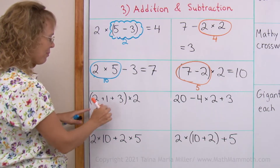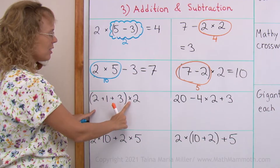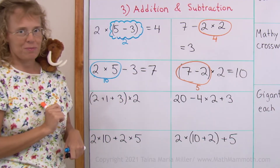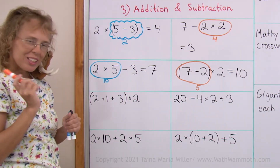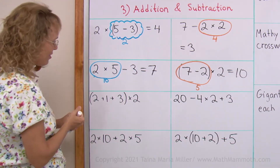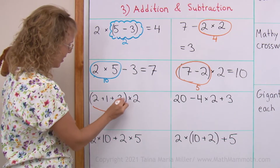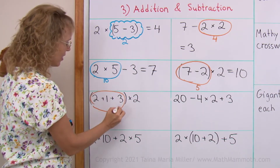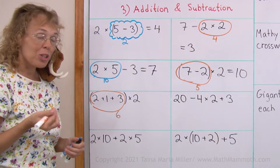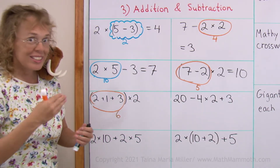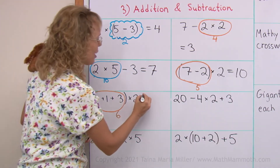Over here there are additions and a multiplication, but there are parentheses too so obviously that gets done first. This here is 6, and 6 times 2 or 2 times 6 equals 12 — two groups of 6.